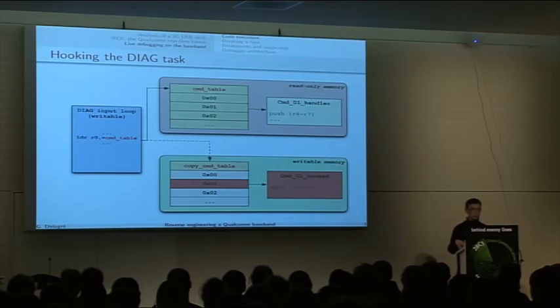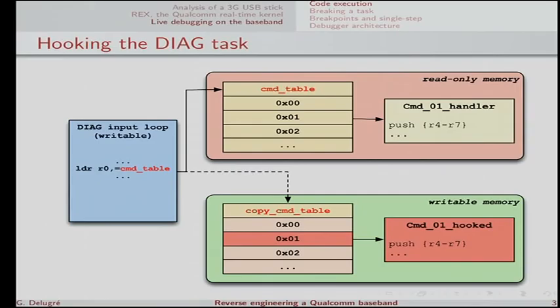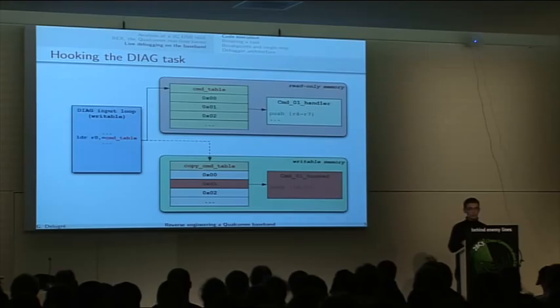It's possible to quickly get code execution because only the first 12 megabytes of memory are marked as read-only in the page table. The code section of the binary is 16 megabytes long, so there are about 4 megabytes which are writable. Luckily, the diagnostic loop and link commands are in this range. So you can just rewrite the command table pointer, duplicate the command table pointer elsewhere, and get code execution through this — just hooking a command. It's very easy.